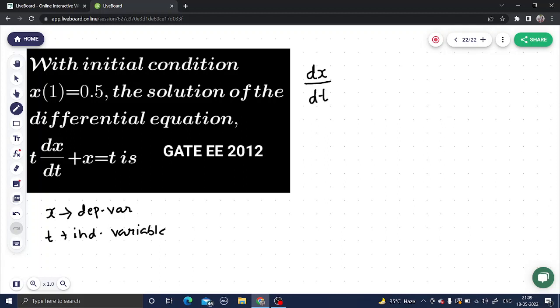If we divide both sides by t, we get dx/dt plus 1/t times x equals 1. So this is clearly of the form dx/dt